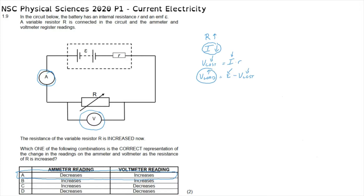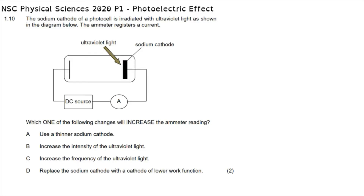A simpler way to see this: when current decreases, less energy is lost to internal resistance, so more energy is available externally — therefore the voltmeter reading increases, confirming option A for question 1.9.